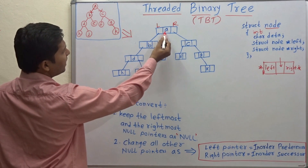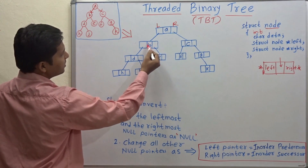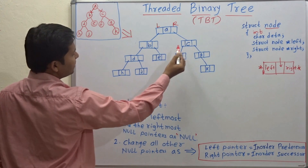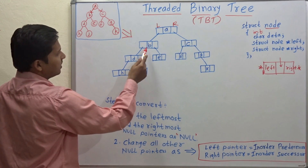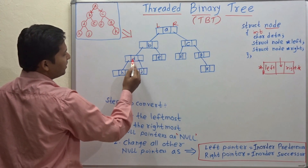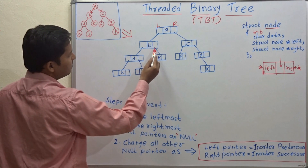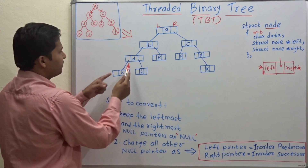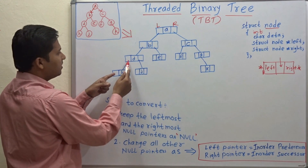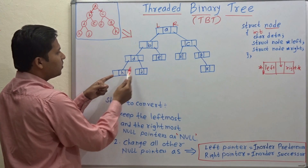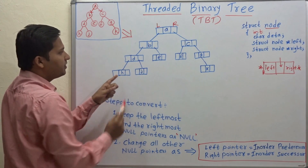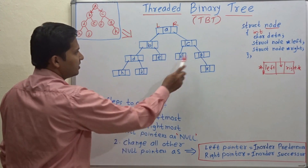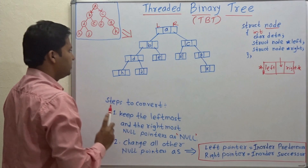For node A, the left pointer points to B and the right pointer points to C. For B, the left pointer points to D and the right pointer to E. For D, the left pointer points to H and the right pointer to J, and similarly in the other part of the tree.